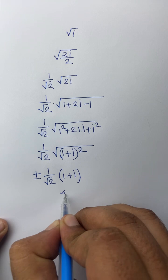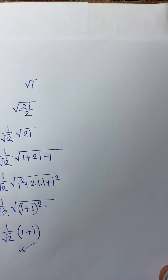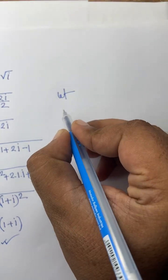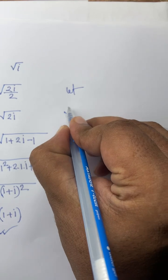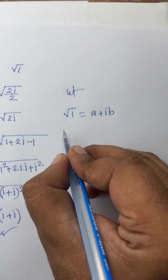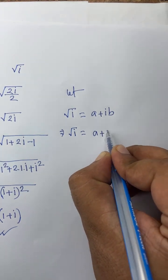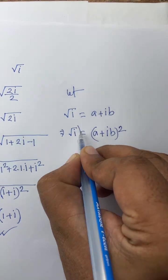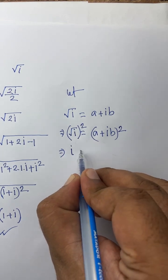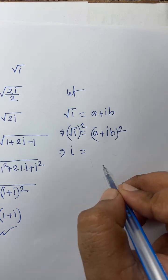This is our final answer. Now I will solve this question using another method. First of all, let square root of i equal to a plus bi. Then I use both sides squared. The square root cancels, so it will be i equals a plus bi whole squared.